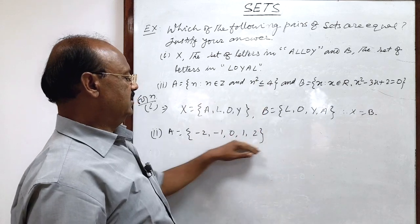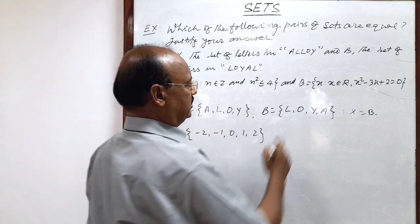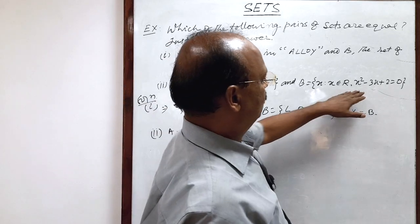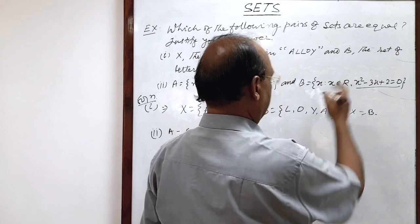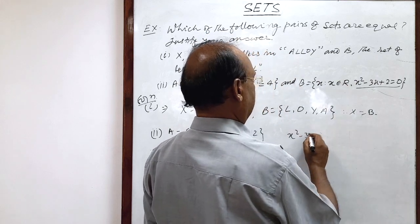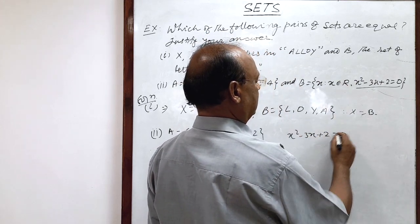And the set B here, we have to solve this given equation for set B. Here equation is x square minus 3x plus 2 is equal to 0.